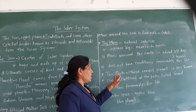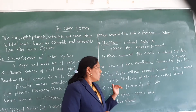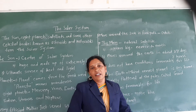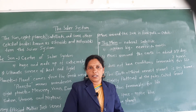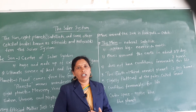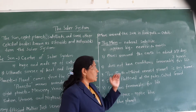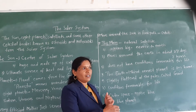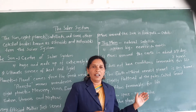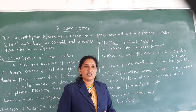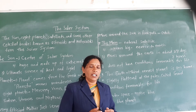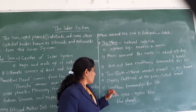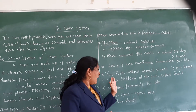Next is the Earth. Earth is the third nearest planet from the sun and it is our home planet — we are living on the Earth. Its distance from the sun is 150 million kilometers.